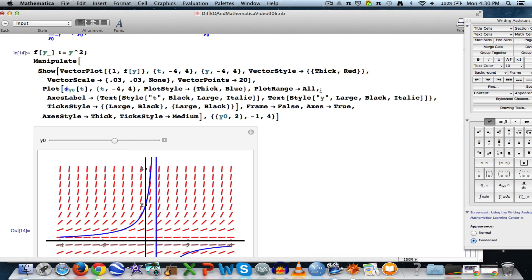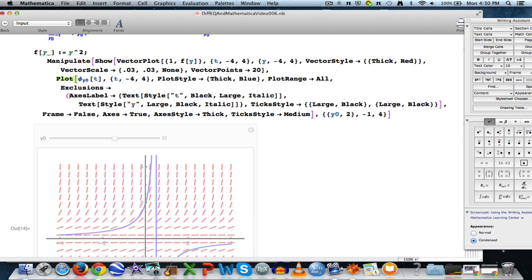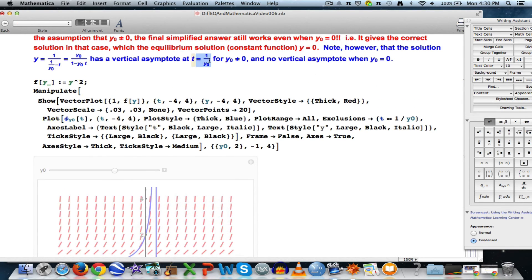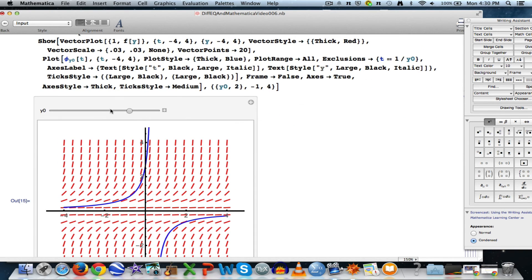And then we want to get rid of that vertical asymptote. Exclusions can get rid of that. Exclusions arrow inside curly braces. Put t double equals one over y0 because that was where the vertical asymptote occurred. That'll get rid of that vertical asymptote so it looks nicer. And we change y0 and we get horizontal translations of the original graph by changing that initial condition.